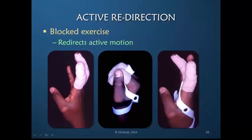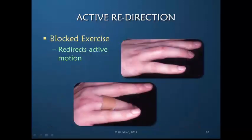We are redirecting active motion, but an exercise device does it for a short period of time and once that exercise is completed, there is no carryover into normal active motion. That's the reason that the blocked exercise needs to be prolonged, and we are calling that prolonged blocked exercise active redirection. We direct active motion to where it's needed.